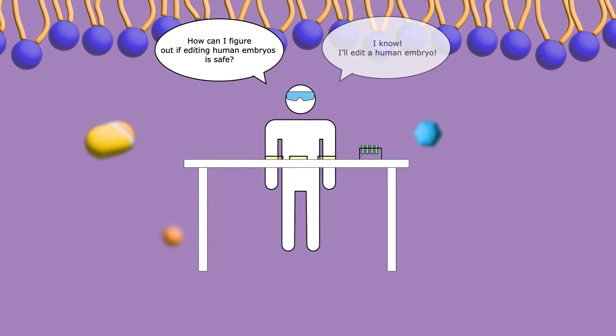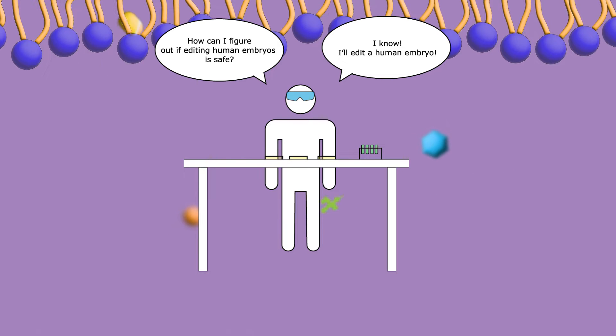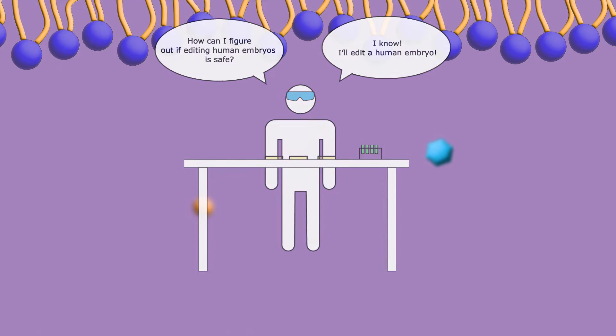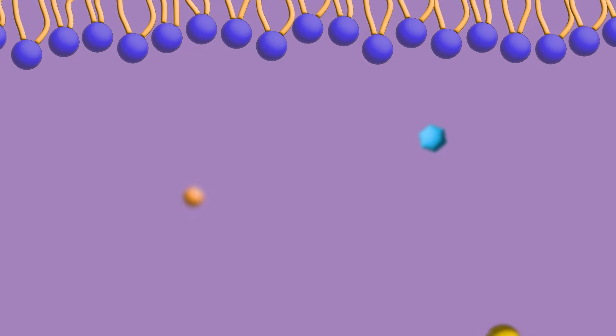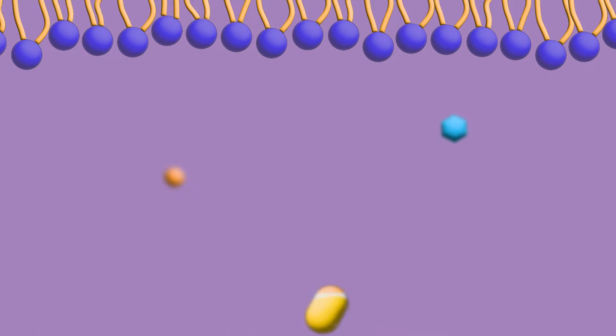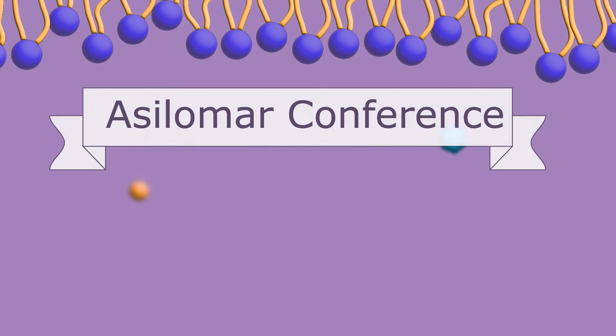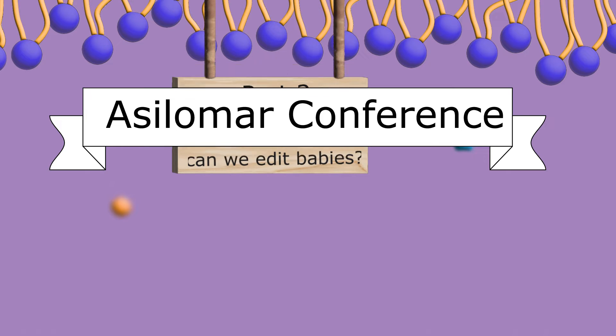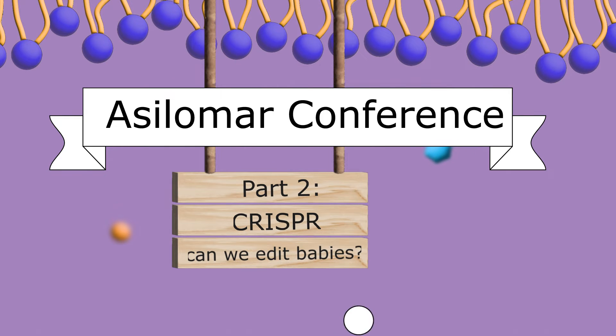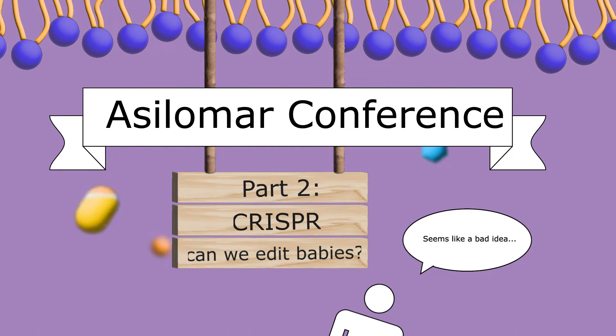which raises an interesting question. How can the safety of editing human embryos be assessed if not by editing human embryos? Even if the safety of CRISPR is assured, there are still ethical issues to be addressed. How can this level of genome editing in humans be brought to the world stage without stretching the fabric of society?